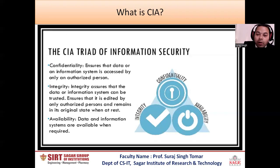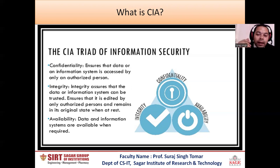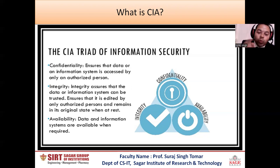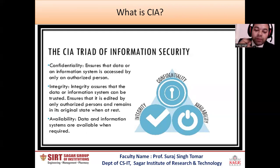What is CIA? The CIA triad of information security. First, confidentiality ensures that the data or an information system are accessed by only an authorized person. Second, integrity ensures that the data or information system can be trusted, ensures that it is edited by only an authorized person and remains in its original state when at rest. Third, availability — data and information systems are available when required.